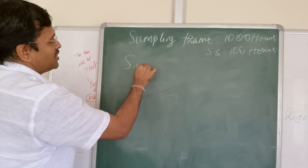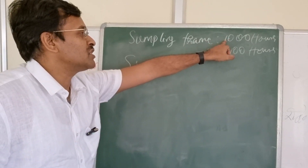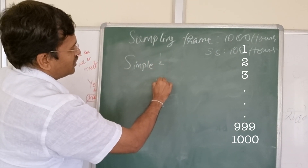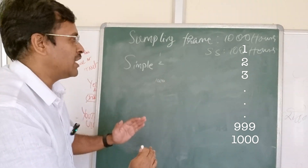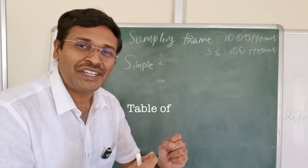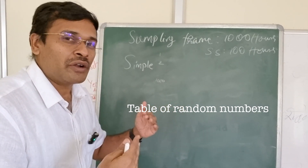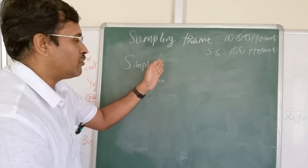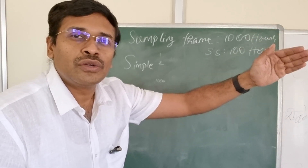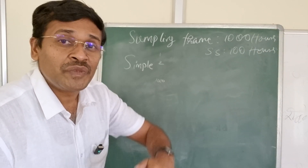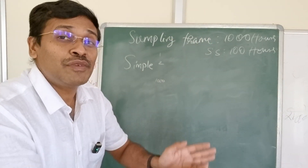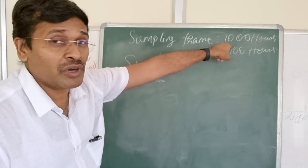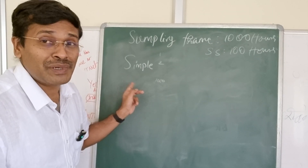The first one is simple random sampling. Here, the houses from 1 to 1000 are individually numbered. Then we use a special table called a random number table, or we can use a random number generator. It will randomly give a number from 1 to 1000 — 773 will come, then 200, then 996, then 3. Like this, randomly from the 1000 sampling frame, the computer gives the numbers, and we go to that numbered household to collect data. That is simple random sampling.